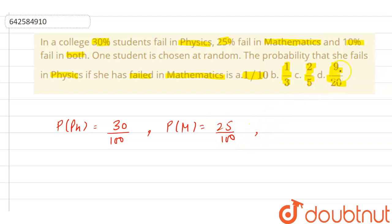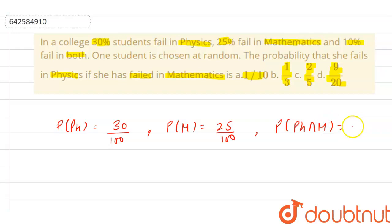It is also given that 10% of students fail in both. This means the probability that a student fails in both physics and mathematics is equal to 10%, that is 10 by 100. The question asks: one student is chosen at random — find the probability that she fails in physics if she had failed in mathematics.